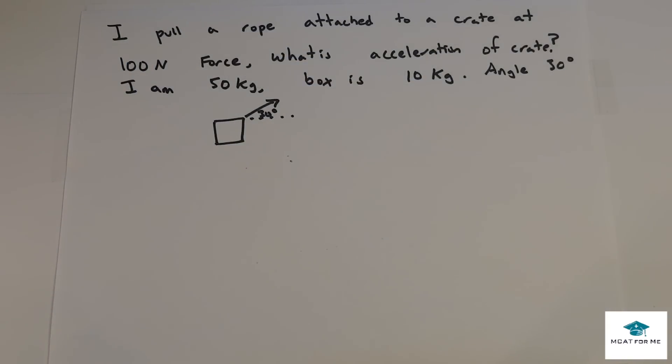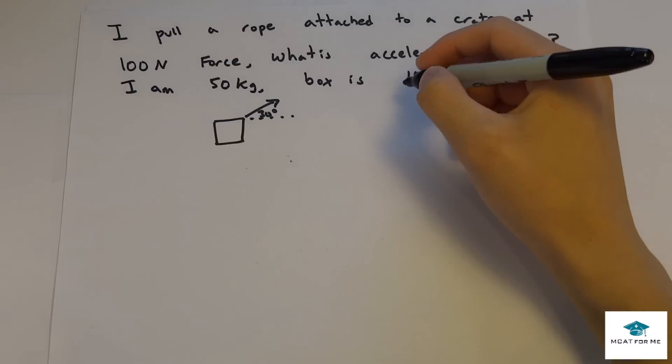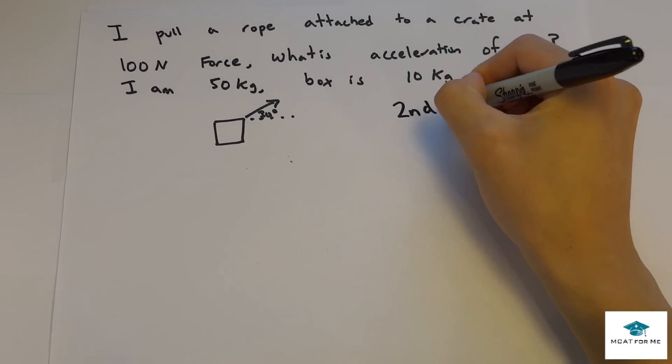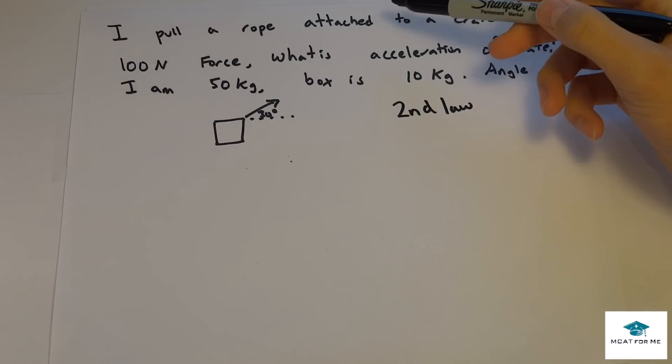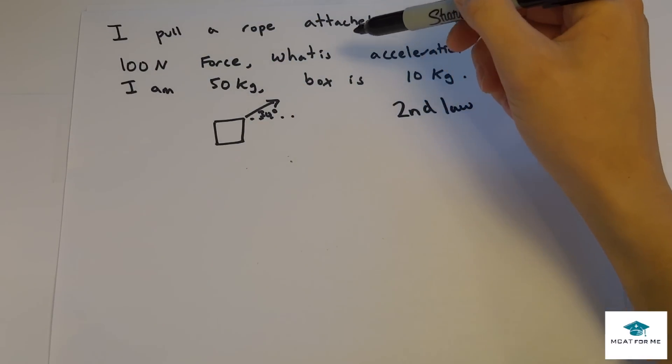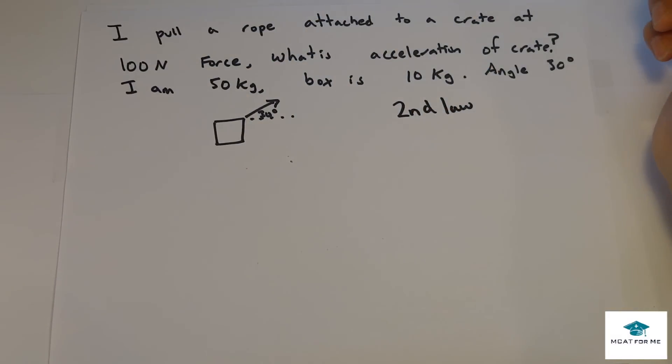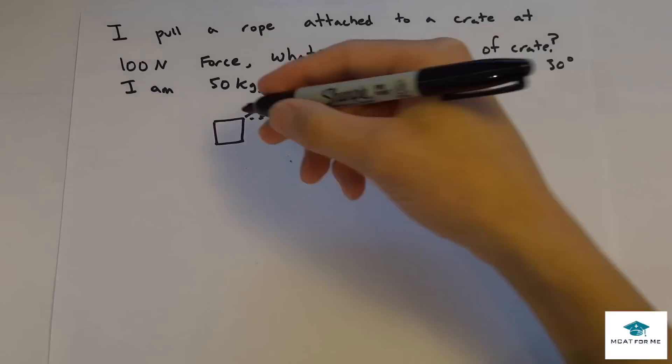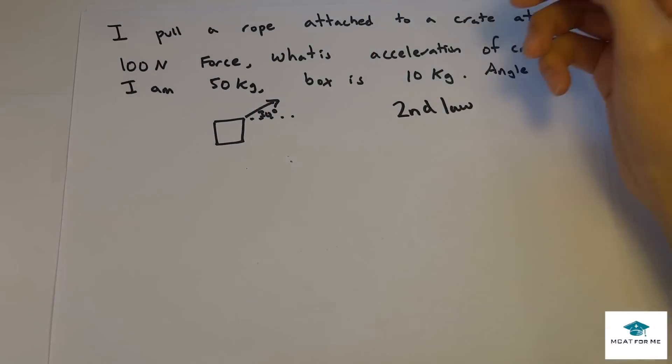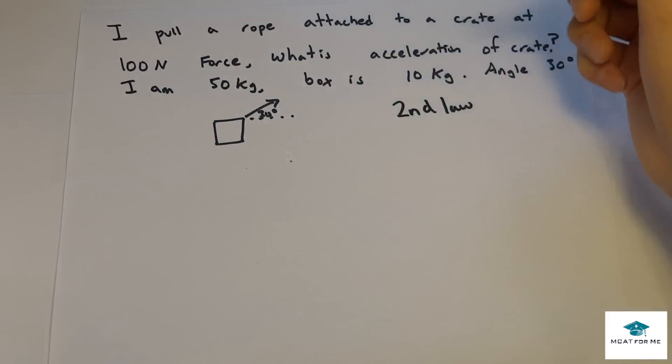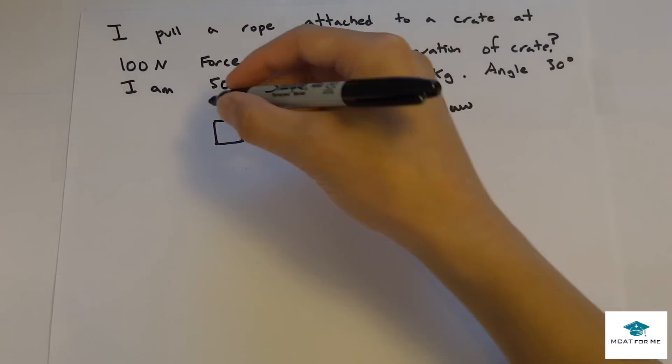And in this example, we'll see how Newton's second law comes into play. So this one's saying, I pull a rope attached to a crate at 100 newtons force. What is the horizontal acceleration of the crate? The man who's pulling is 50 kilograms and the box is 10 kilograms.